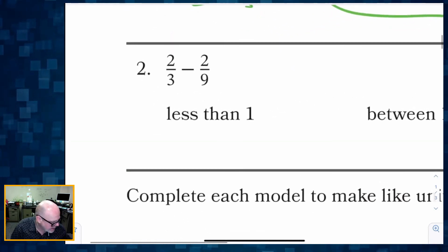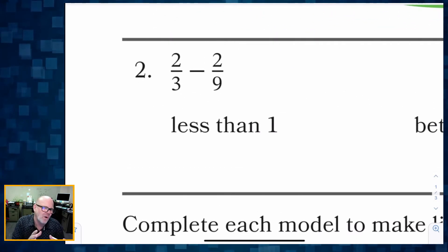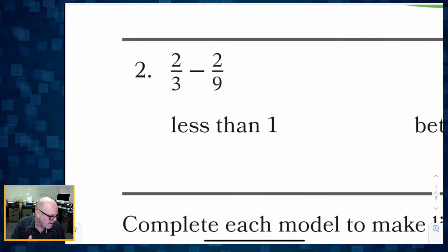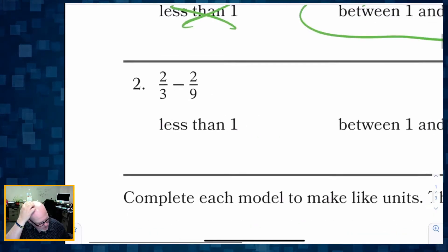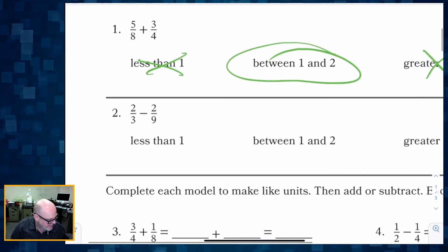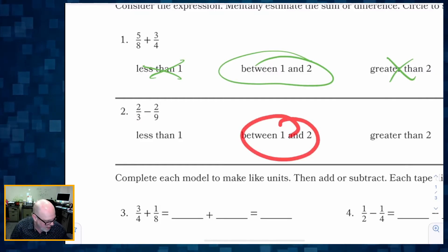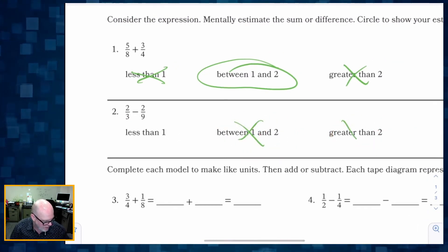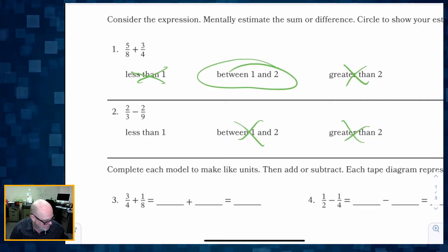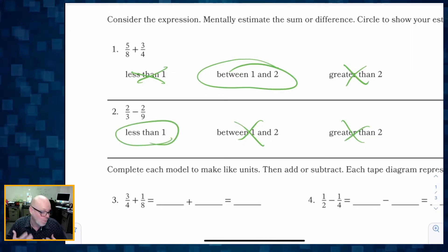Here's the next one: two-thirds, which is less than one whole, and we're going to take away two-ninths. So if we start with something that's less than a whole — two-thirds — and then take away from it, there's no way we could be between one and two, and there's no way we could be greater than two. That means our answer has to be less than one.